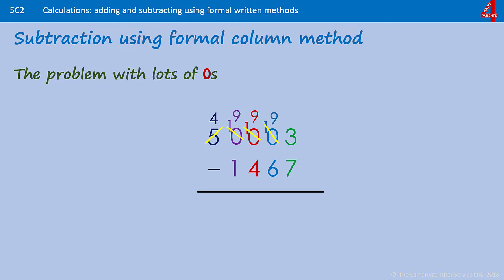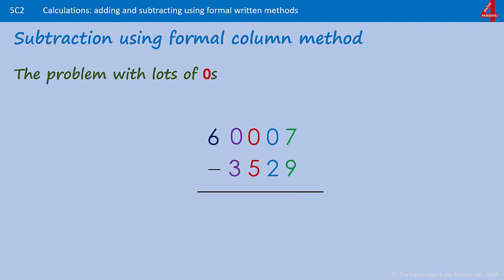We take one from the tens to make it nine, and now that three becomes thirteen. Thirteen take away seven is six, nine take away six is three, nine take away four is five, nine take away one is eight, and we're left with four in the ten-thousands column — forty-eight thousand five hundred and thirty-six. Here's one just like that for you to try — pause the video and have a go.